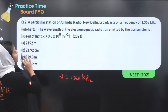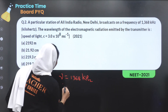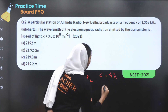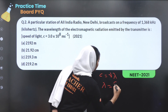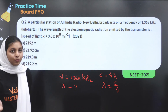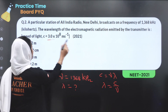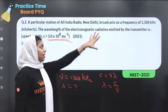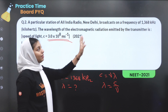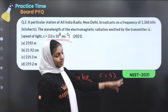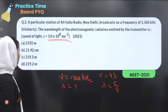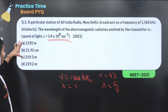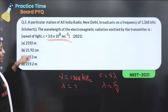Find the wavelength of the electromagnetic radiation emitted by the transmitter. This is a straightforward question. We use c equals nu times lambda, so lambda equals c divided by nu. The value of c is 3 × 10⁸ m/s and the frequency is 1368 × 10³ Hz. Lambda comes out in meters or centimeters.